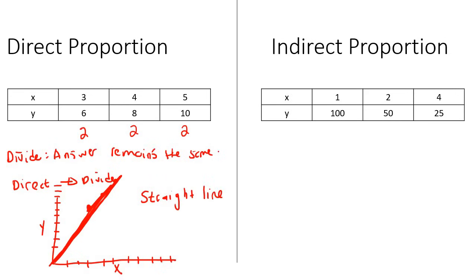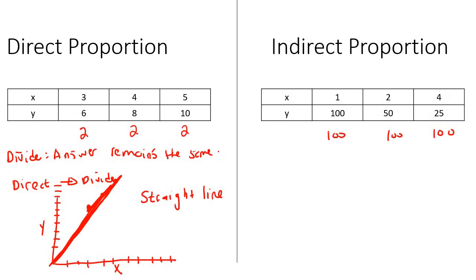Now let's look at indirect proportion. So if you had to multiply these, that'll give you a hundred. If you had to multiply these, that'll give you a hundred. And if you had to multiply these, that would give you a hundred. So when you are busy with indirect, the numbers will multiply — you must multiply.